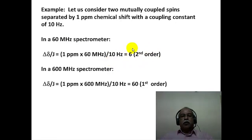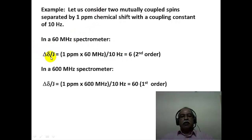Consider a simple example of two mutually coupled spins separated by about 1 ppm with a coupling constant of 10 Hz. In a 60 MHz spectrometer, delta-delta is about 60 Hz, giving a ratio of 6 — typical second order behavior. However, in a 600 MHz spectrometer, delta-delta becomes 600 Hz; divided by 10, the ratio is 60, placing the spectrum firmly within the first order domain.